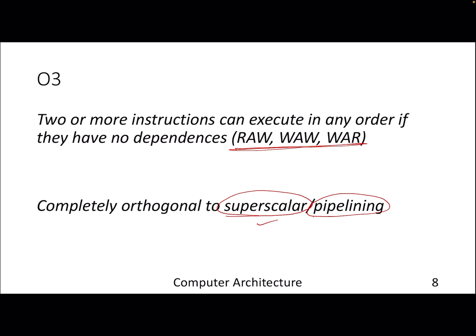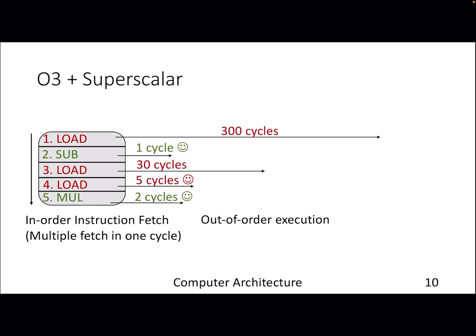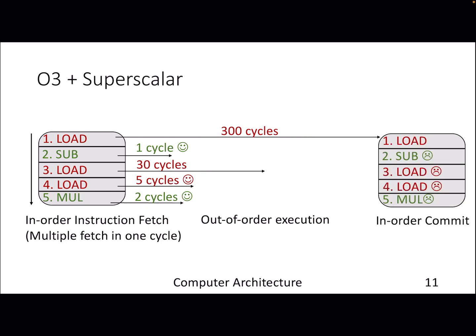Let's look at the combination of out-of-order and superscalar. Assume a superscalar processor of width 5 — a five-way superscalar — so in one cycle we fetch five instructions. When it comes to the execution stage, instruction 5 may finish way before instruction 1; instructions 2, 3, 4, 5 can all be done before instruction 1, assuming they are independent. But even though we execute out of order, we need to make sure that program order is maintained because that's how the programmer sees the state of the processor.